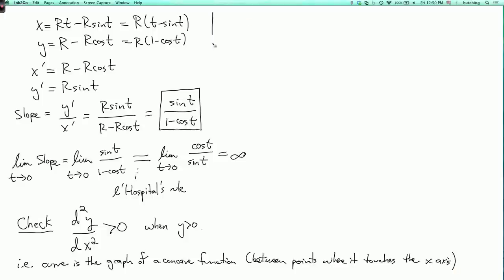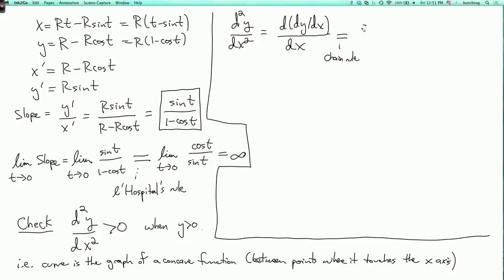So, to calculate this, d squared y dx squared, I can think of this as d of dy dx dx dx. Now using the chain rule, similarly to the way we calculated the slope, I can divide the top and bottom by dt, so this is a slightly subtle thing here. But by the chain rule, I have d of dy dx dt over dx dt.